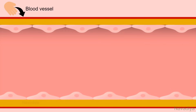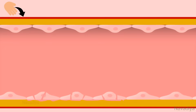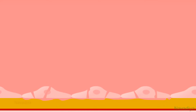Let's say this is a blood vessel in your hand. This is its endothelium and this is collagen underneath it. Under physiological conditions, platelet plug formation is prevented by endothelial cells. But if you injure your hand, it damages the endothelial cells of your blood vessel and exposes the collagen underneath. This will now trigger platelet plug formation.